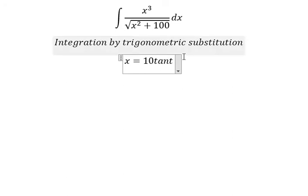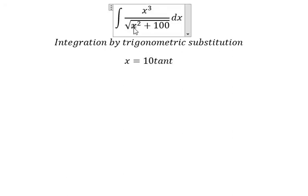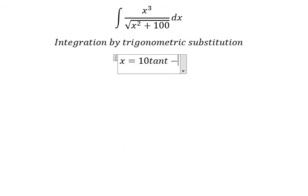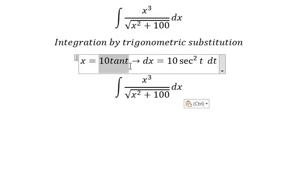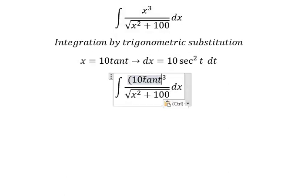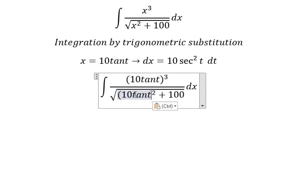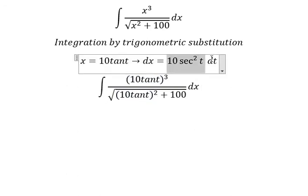Because if I put x = 10 tan(t) in here, we have 100 tan²(t) + 100. We can do factorization: 100(tan²(t) + 1). We change tan²(t) + 1 to sec²(t), and then simplify the square root. Now we need to find dx by taking the derivative of both sides, and we have dx = 10 sec²(t) dt. I will substitute this in.